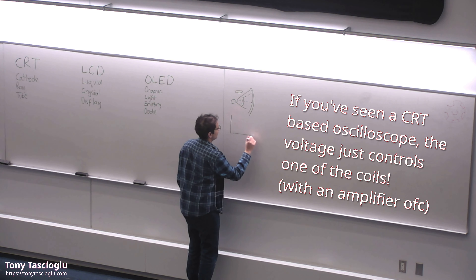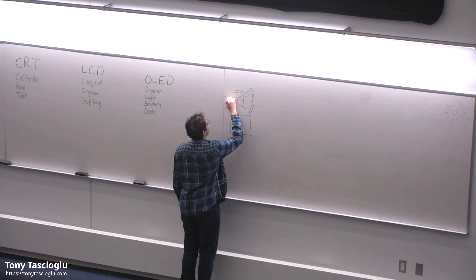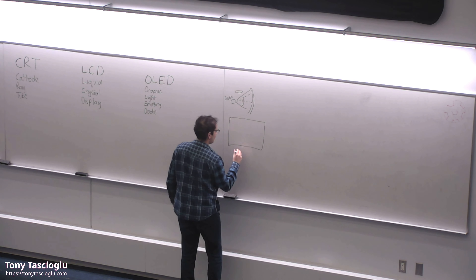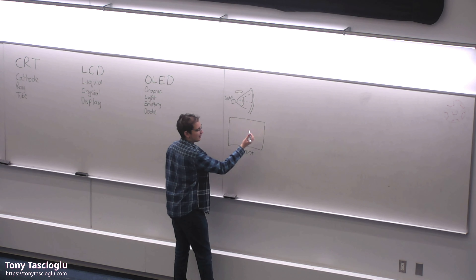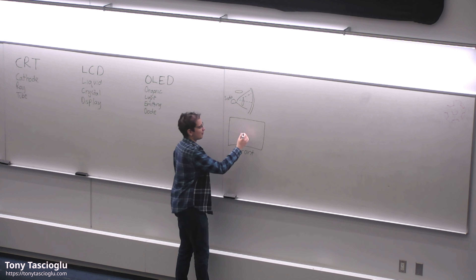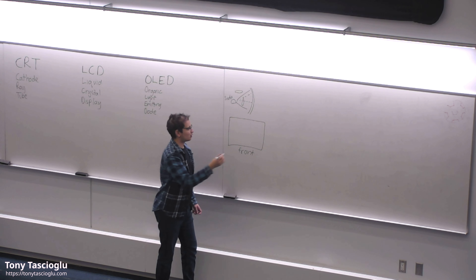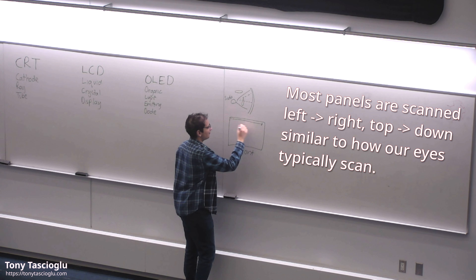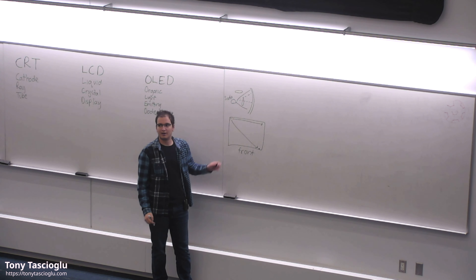Traditionally, CRT panels were curved if you look at older TVs, because it maintained the same distance from the gun to the middle as well as to the sides when scanning. How these worked was essentially you would have two coils, one doing your x-axis and one doing the y-axis. Since electrons are negatively charged, you can always use electromagnets to shift the beam. So on your display, without any input to those electromagnets, you would just get a dot in the middle. We then use electromagnets to scan all the way from left to right, as well as top to down, ending the frame, and then the beam shoots back up.